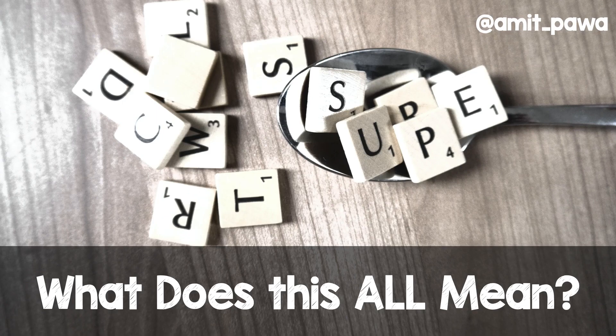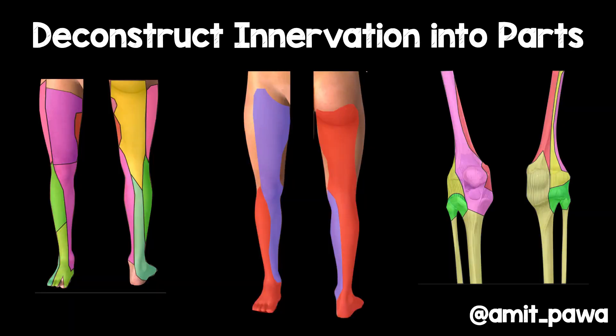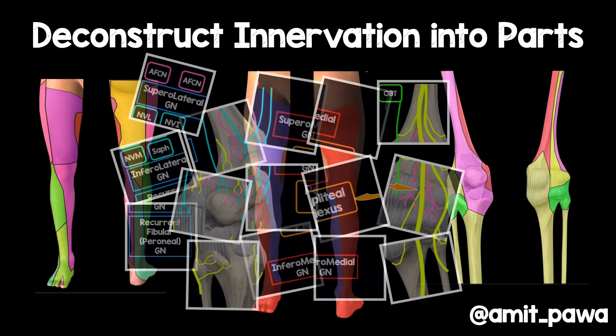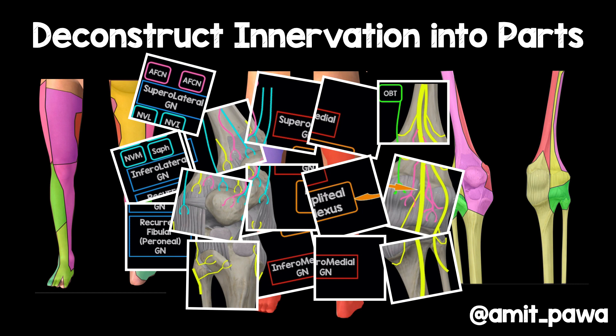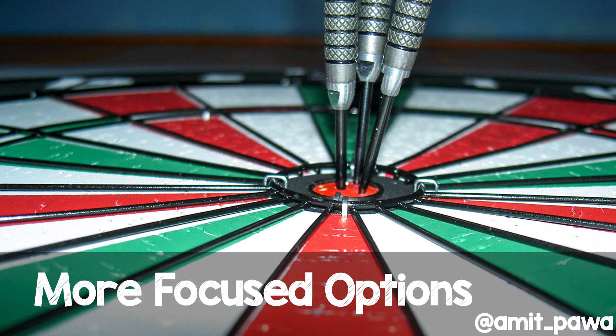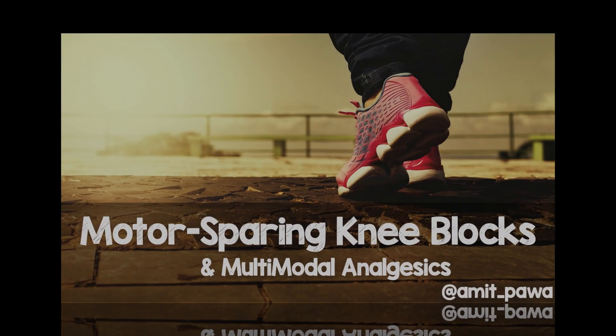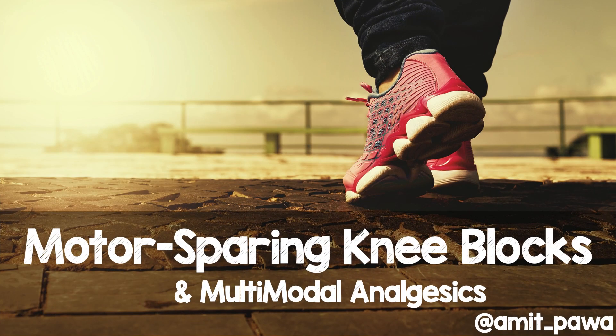So what does it all mean? We've got genicular branches, the nerve to vastus intermedius, lateralis, and medialis. We can deconstruct the innervation of the knee into small component parts — like pieces of a jigsaw puzzle — and that allows us to come up with more focused options. Ultimately we can deliver motor-sparing knee blocks, which we can use in addition to multimodal analgesics.